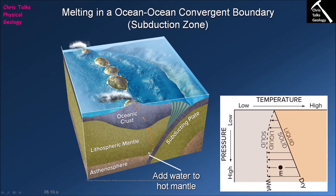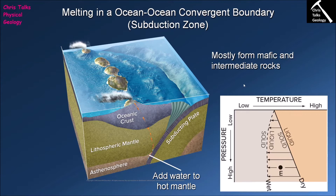If our mantle rocks are at point E, normally the solidus under dry conditions would place E in the solid field. However, the addition of water as the flux destabilizes the mantle rocks, causing the solidus to shift — shown by the dashed line. Rock E suddenly finds itself in the liquid field and begins melting. At this point, magma is generated from the melting of mantle rocks, producing a mafic magma.